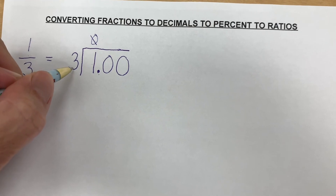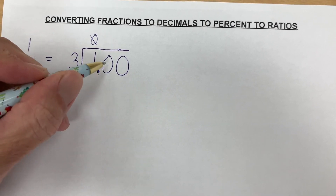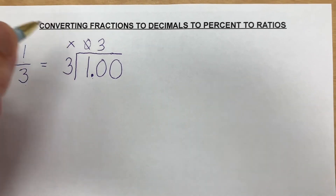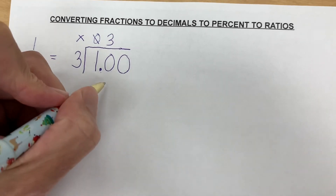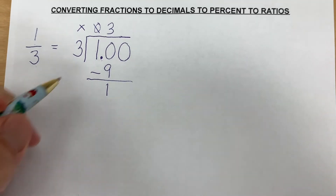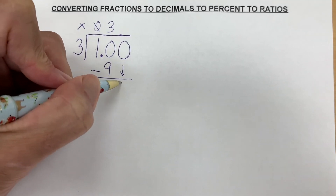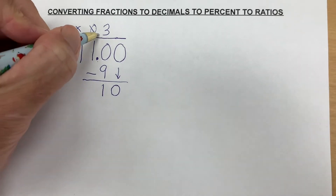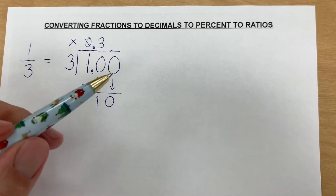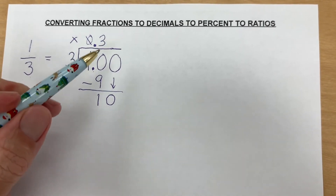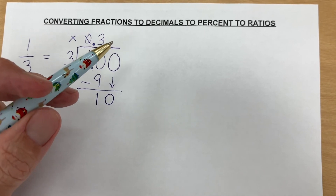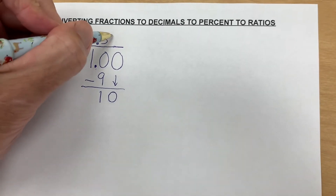Now we're really saying: can three go into ten? The answer is yes, three times. Three times three is nine. We subtract and we notice we get a one again, which means the numbers are going to keep repeating. So we need to go to at least the hundreds place because we're going to convert to percent later. So it's another three.